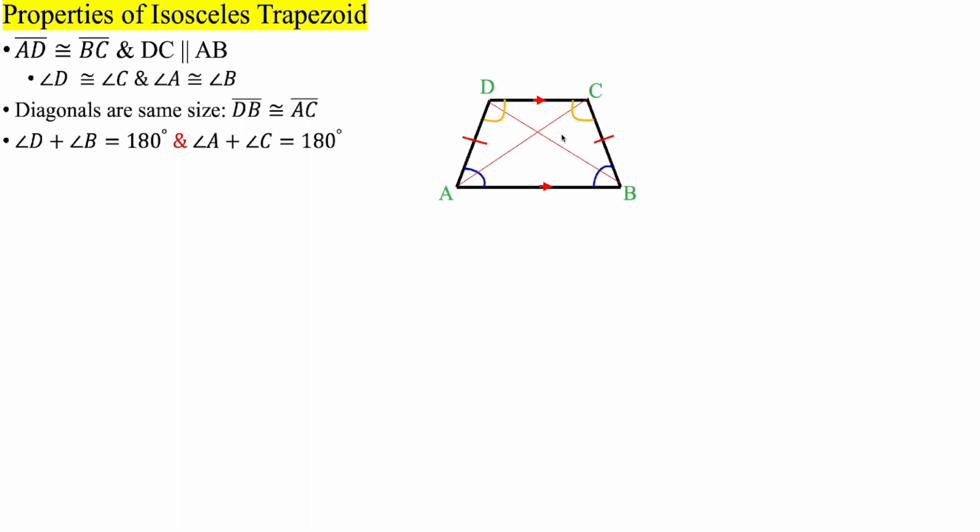Additionally, the line segment DB is equal to the line segment AC. Angle D plus angle B will equal 180 degrees. Likewise, angle A plus angle C will equal 180 degrees.